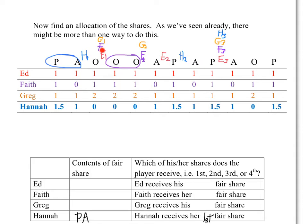So we're going to give Faith her second fair share. We'll flip a coin. Let's say Faith wins it. So Faith will receive her second fair share consisting of these two oranges. That gets recorded down here, and this is her second fair share.